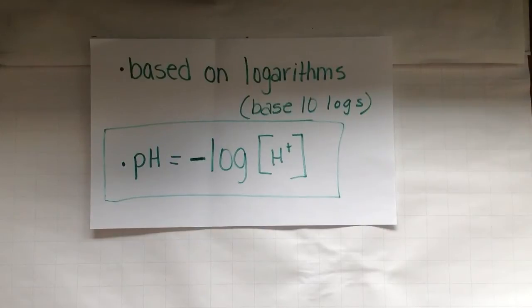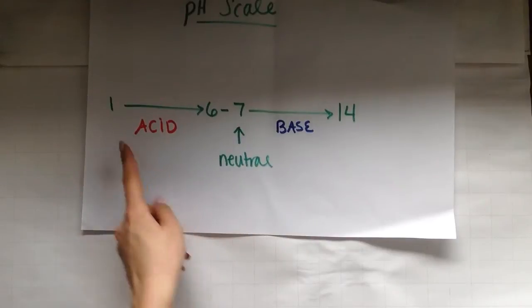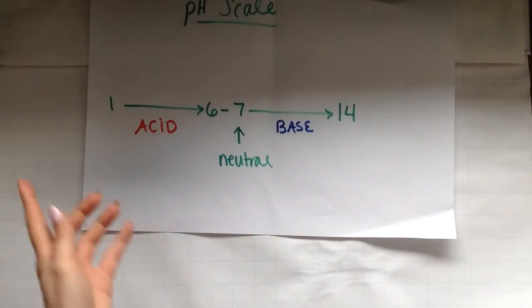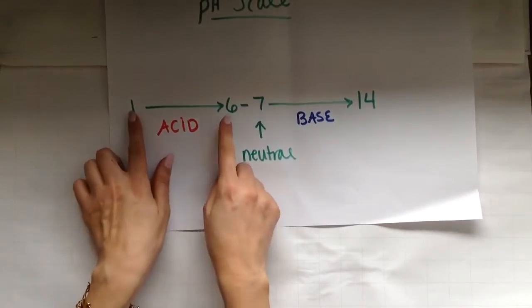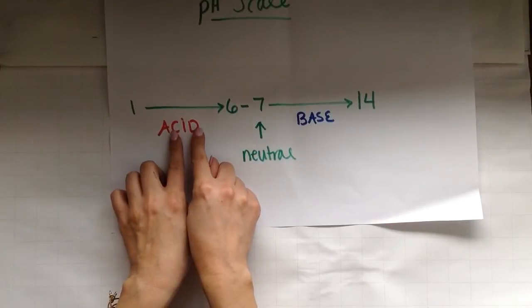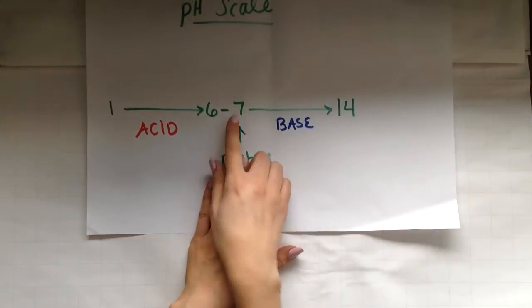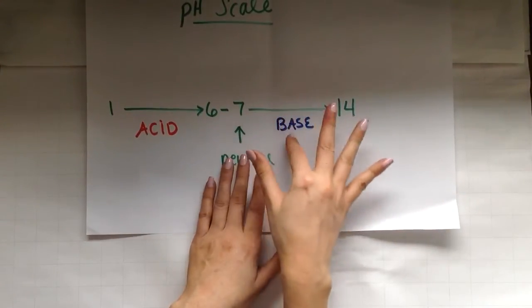So as I said earlier, the pH scale ranges from 1 to 14, though you can go below a 1 and above a 14, kind of like a super acid and a super base. If your pH value is between 1 and 6, it's considered an acid. If it's a 7, it's neutral. 7 to 14 is a base.